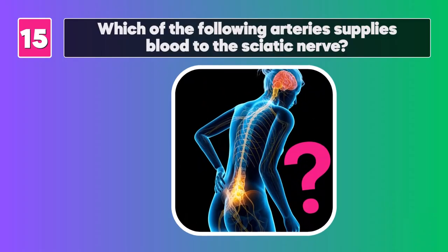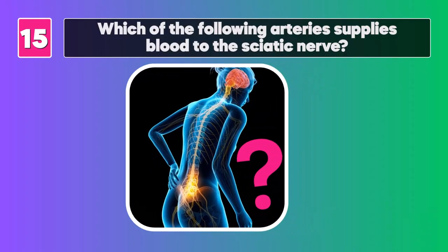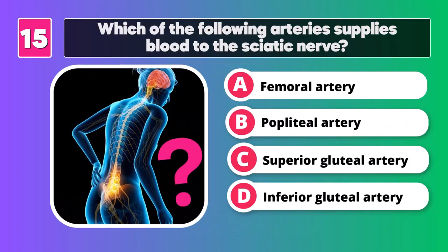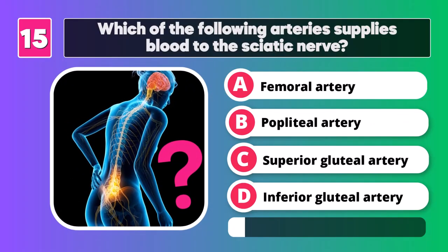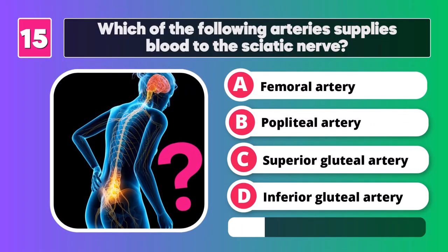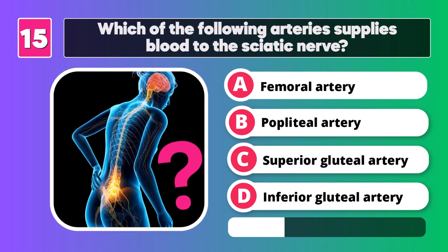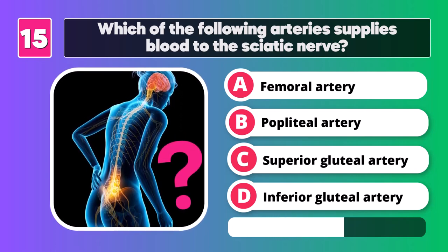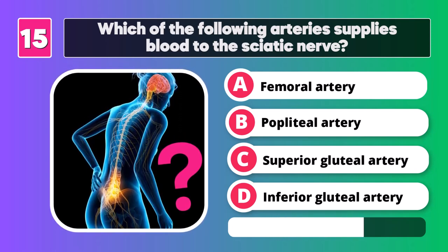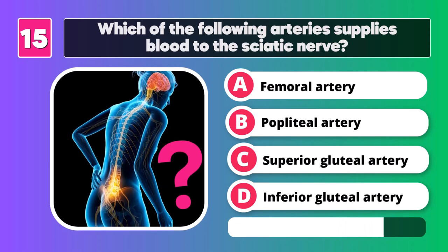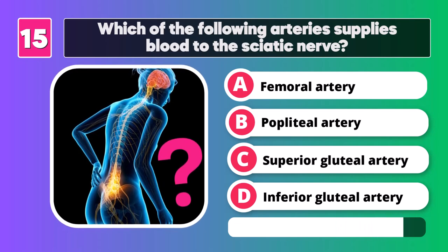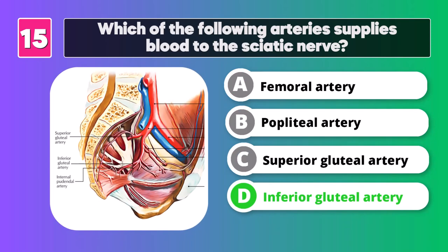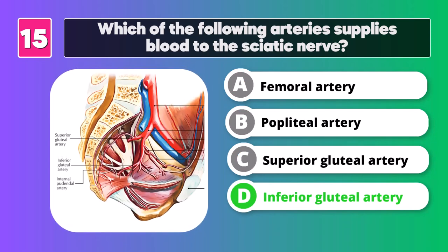Which of the following arteries supplies blood to the sciatic nerve? Inferior gluteal artery.